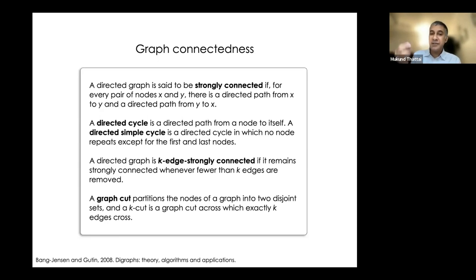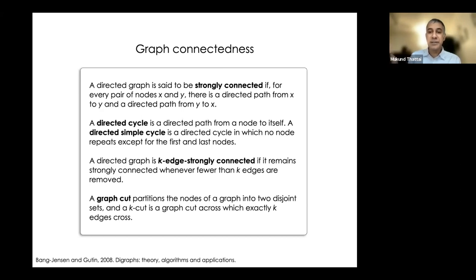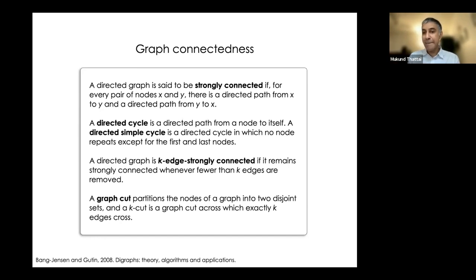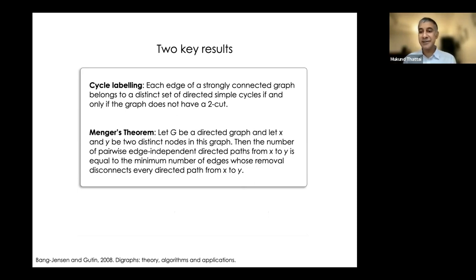A graph is K-edge strongly connected if removing fewer than K edges leaves it still strongly connected — this captures how many different ways there are to travel between spaces. One way to check graph connectedness is to break the graph into two disjoint subsets and see how many edges cross in each direction. If a graph is strongly connected, there must be at least one edge crossing in each direction across any partition. The min-cut max-flow theorem gives intuition: the maximum flow you can send between two nodes equals the minimum diameter of the pipe across any cut.